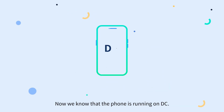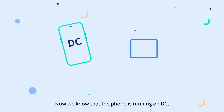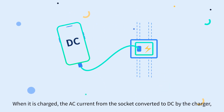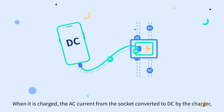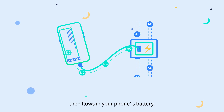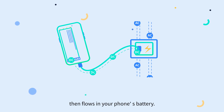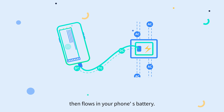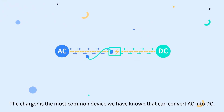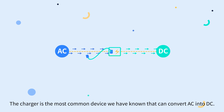Now we know that a phone runs on DC. When it is charged, the AC current from the socket is converted to DC by the charger, which then flows into the phone's battery. The charger is the most common device we use that can convert AC into DC.